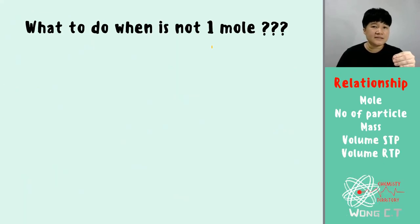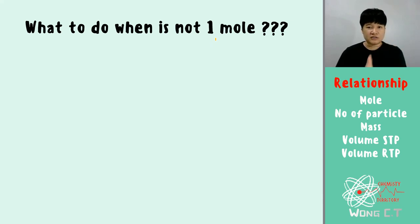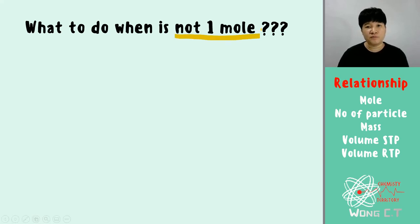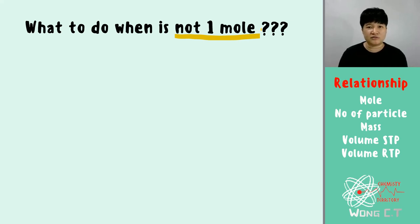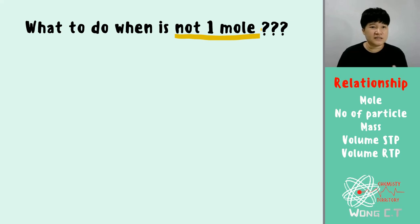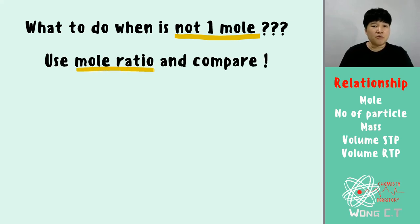All the exercises so far used 1 mole, but in exams the question will give you values like 0.13 mole, 0.25 mole, or 0.037 mole — not 1 mole. So what do we do when it's not 1 mole? We'll be using mole ratio: compare with theory and solve the mathematics.